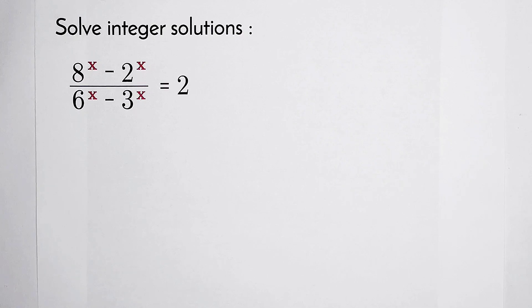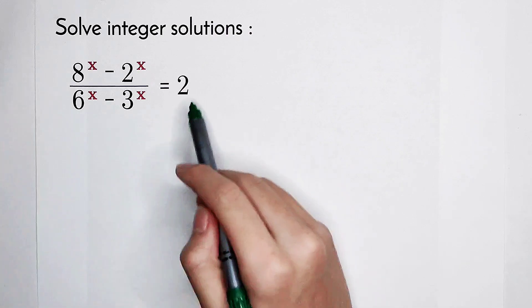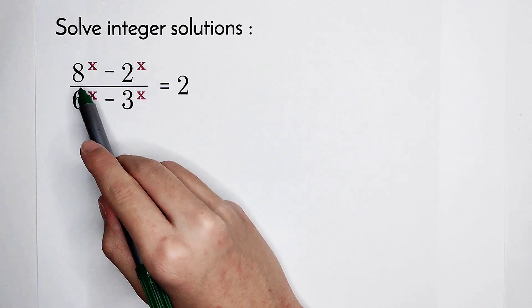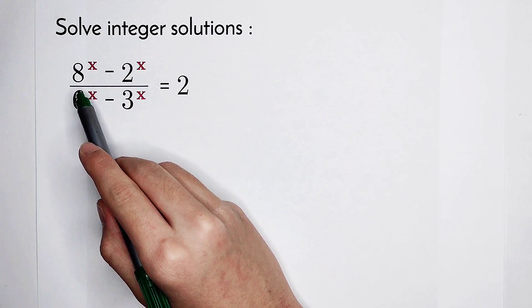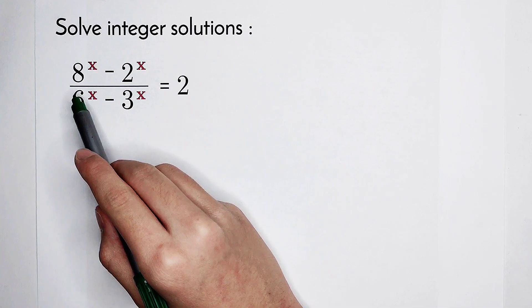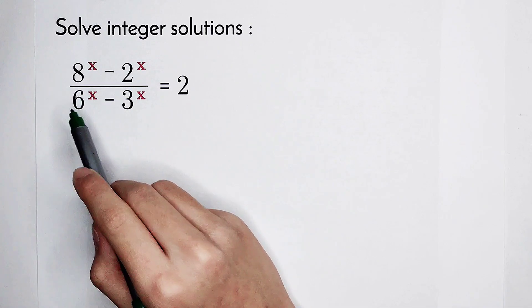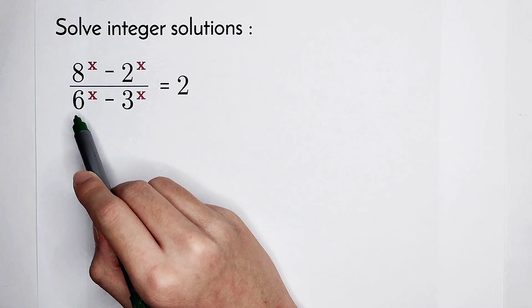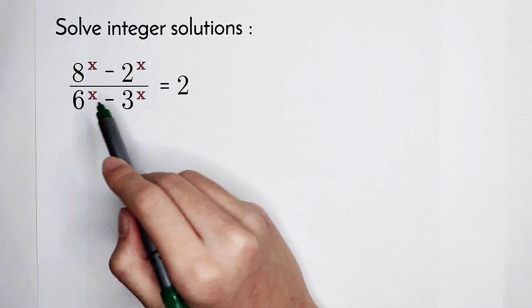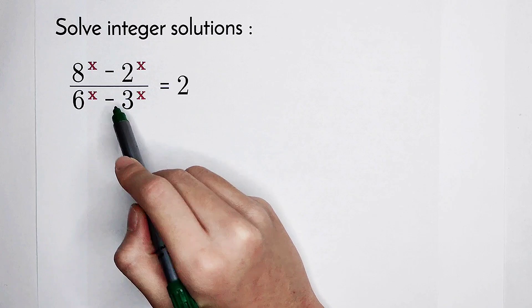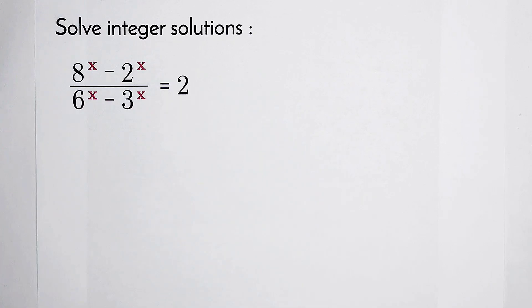Welcome back to MathWinno. Solve the integer solutions of this equation: 8 to the power of x, minus 2 to the power of x, all divided by 6 to the power of x minus 3 to the power of x, is equal to 2.